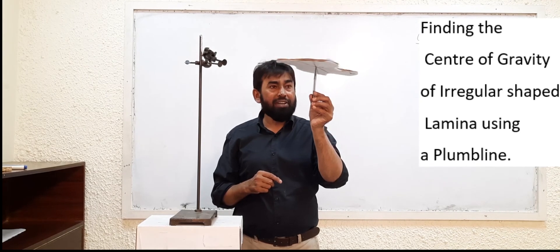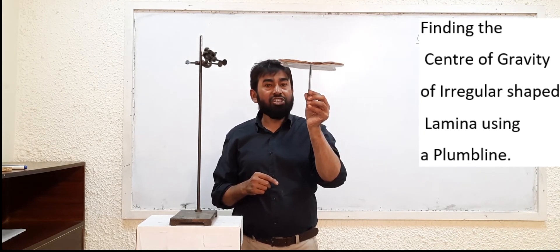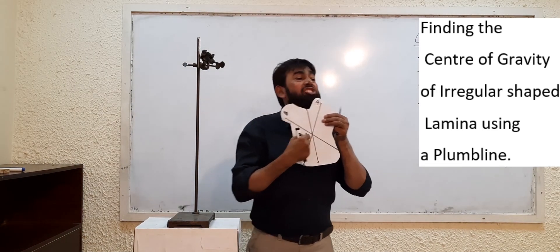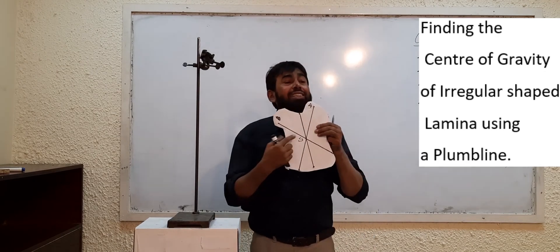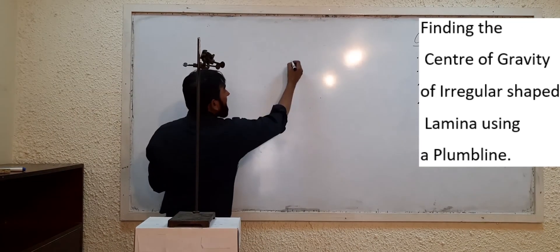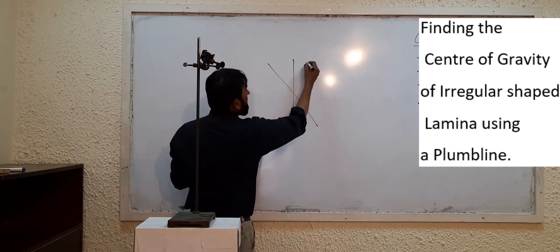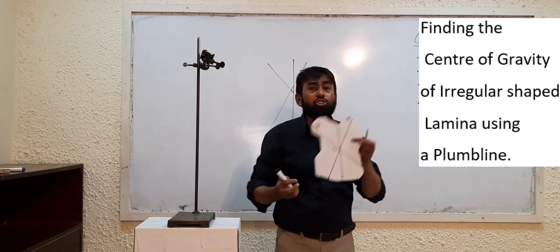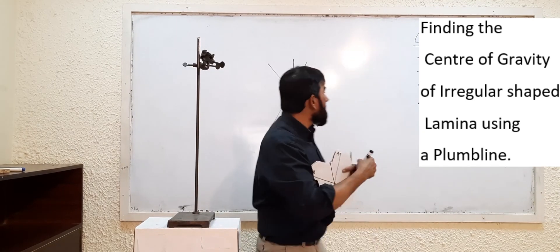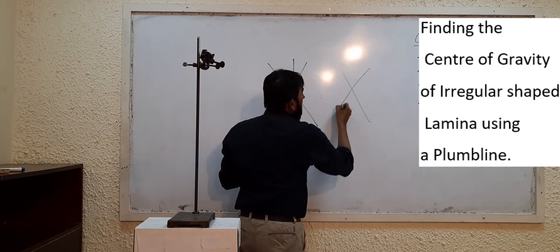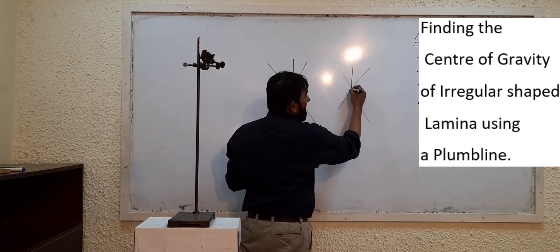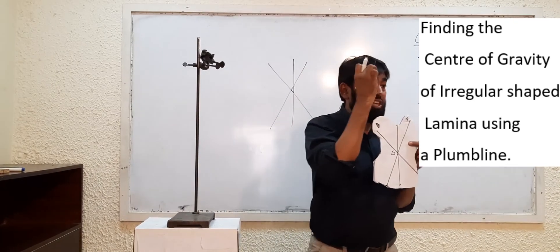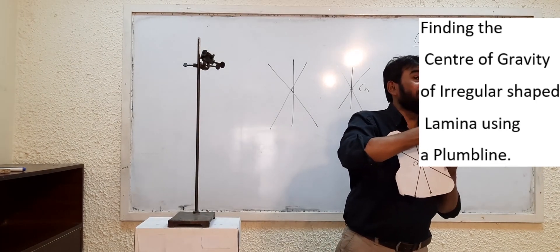These three lines must not make a triangle at the center — that is key to attaining accuracy. If you join the three lines and they form a triangle at the center, it is incorrect. The three lines must meet at a single point. If the smallest possible point is achieved, your result will be the most accurate.